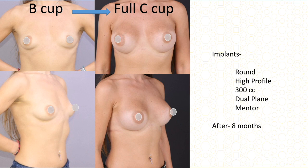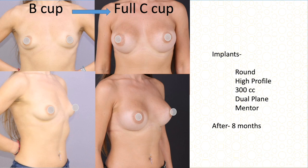This B cup patient has a slightly different chest anatomy and has had babies, so she has a stretched areola — which will stretch further with an implant. To reduce the areola would require a periareolar incision, which could cause scarring, and many patients do not prefer any scar on the breast. So the choice was to make an incision underneath the breast. I used a 300 cc dual-plane high-profile implant to achieve a full C cup. This is eight months after surgery.